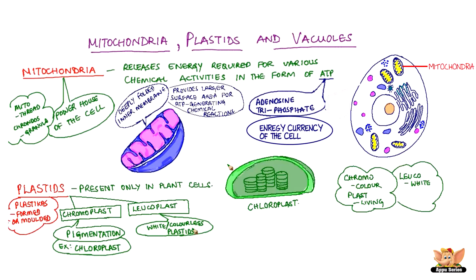Leuco means white. Leucoplasts are white or colorless plastids. Starch, oil, and protein granules are stored in leukoplasts.